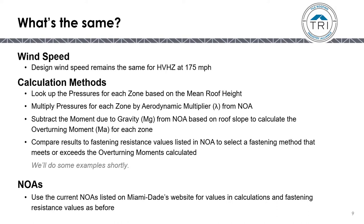The calculation methods remain the same: looking up pressures for each zone based on the mean roof height, then multiplying those pressures by the aerodynamic multiplier from the NOA (Notice of Approval) for the tile product, then subtracting the moment due to gravity from the NOA based on roof slope to calculate the overturning moment for each zone, then comparing results to the fastening resistance values in the tile product NOA. The NOAs listed by Miami-Dade are used in the same manner and do not need to be changed or updated.